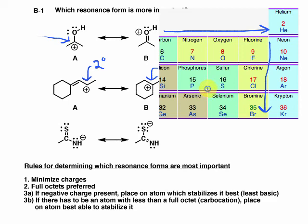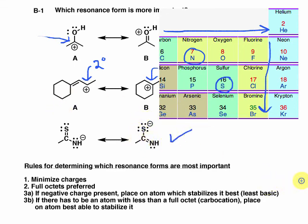When we compare sulfur to nitrogen, sulfur is not only to the right but also below nitrogen on the periodic table. So sulfur is larger, and it's more stable to have a negative charge on sulfur than on nitrogen. That means the resonance form on the right — with the negative charge on sulfur — is more important to the hybrid than the form on the left where the negative charge is on nitrogen. This form is more important, and that's the answer to the third example.